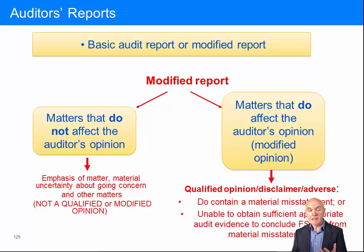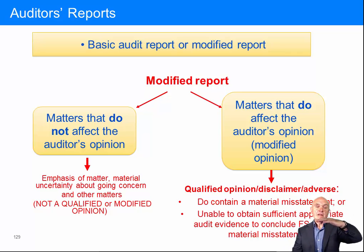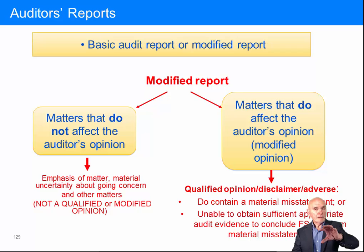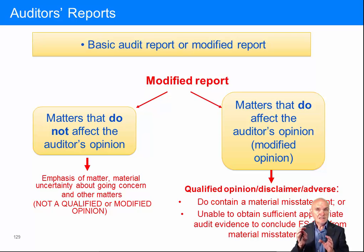We can change from that to what's called a modified report. This is a slightly dangerous phrase to use, but there's no other convenient one — you could say a changed report. There's great confusion between the audit report and the audit opinion. The audit report is a great big long thing starting with independent auditor's report, opinion, basis of opinion, significant audit matters, key audit matters, management's responsibility, auditor's responsibility, and so on — it can be a couple of pages now quite easily. But the audit opinion is the hub, the nub of the matter. We have to draw a distinction between changing something in the report and changing something in the opinion.